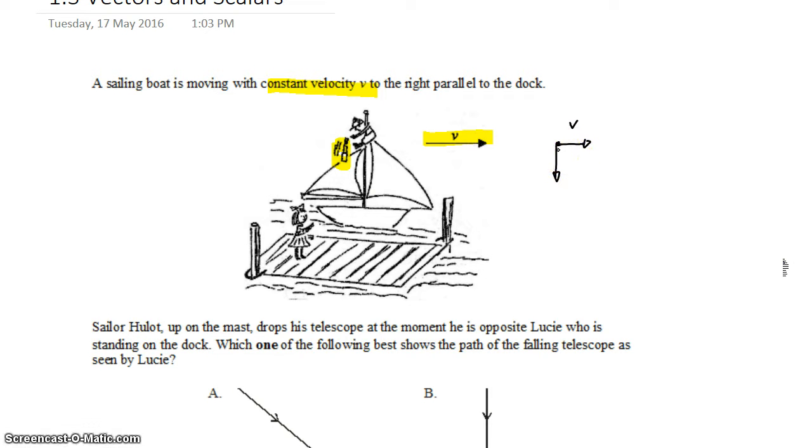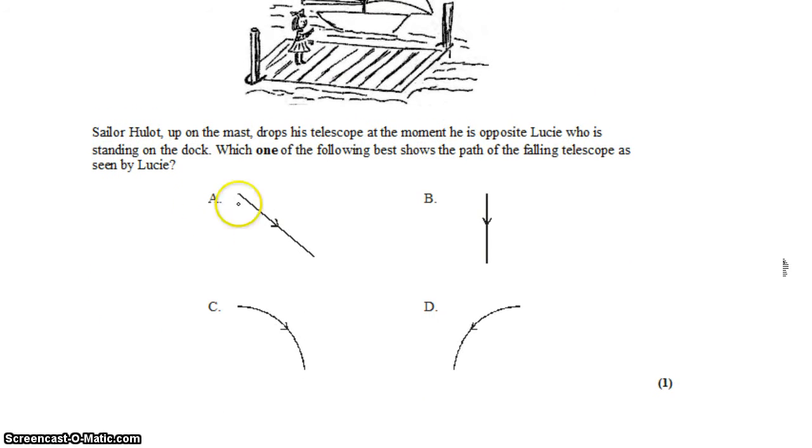We're ignoring any air resistance. So it's going to continue moving to the right just as the sailboat was moving to the right. So if we combine these two vectors, we get something that looks a bit like this. The combined vector is starting to look like answer A.